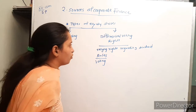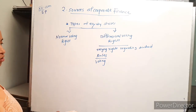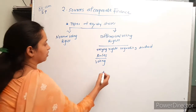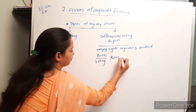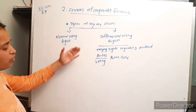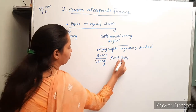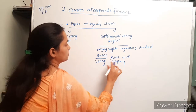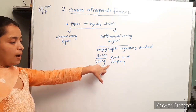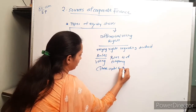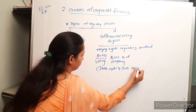Differential voting rights are governed by Rule 4 of the Companies (Share Capital and Debentures) Rules, 2014.